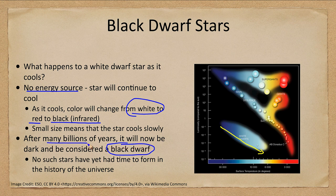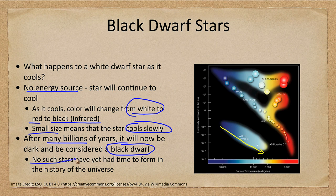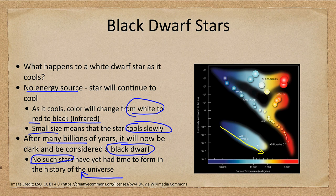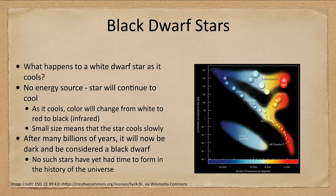Eventually it becomes what we call a black dwarf star. This will take many billions or even a trillion years — it will be completely dark, giving off primarily infrared light. However, because white dwarfs are very small, they cool slowly, taking an extraordinarily long time. In fact, no such black dwarf stars have had time to form in the history of our universe. Even the very first white dwarf to form has not had enough time to cool off to become a black dwarf, though this will eventually happen to all white dwarfs.